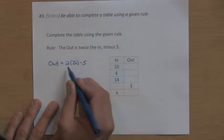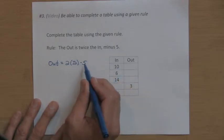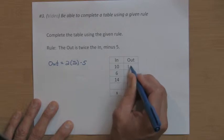So for this value of in, when the in is 10, I'm going to take two times 10, which is 20, minus five. My out is 15.